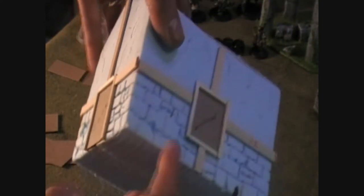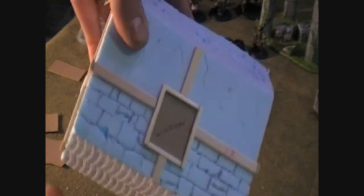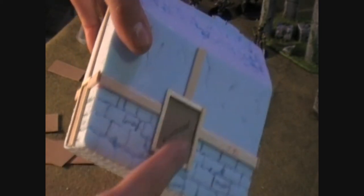Before, we assembled the structure with styrofoam, etched in the brickwork with a pencil, and added the wooden framing, windows, and doors, which the door will get more detail later.